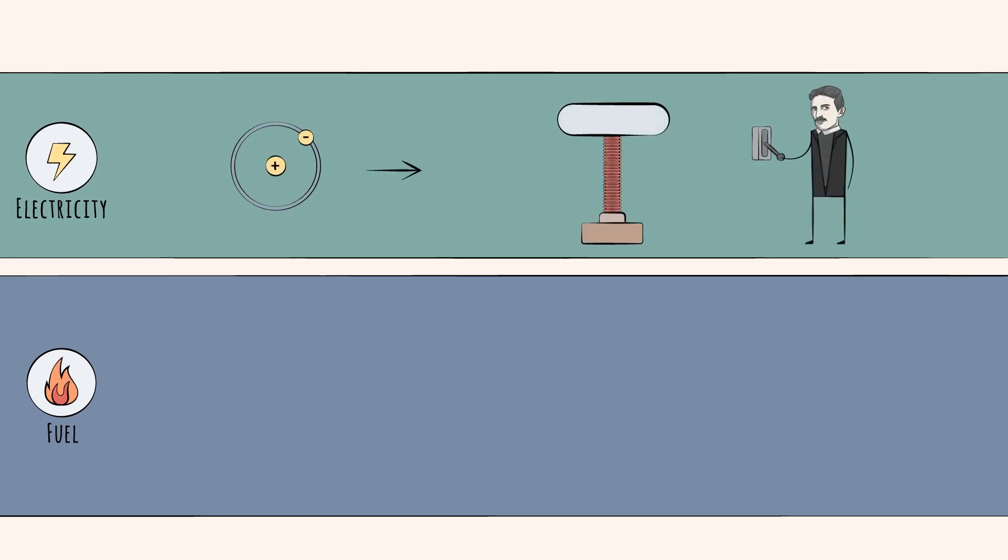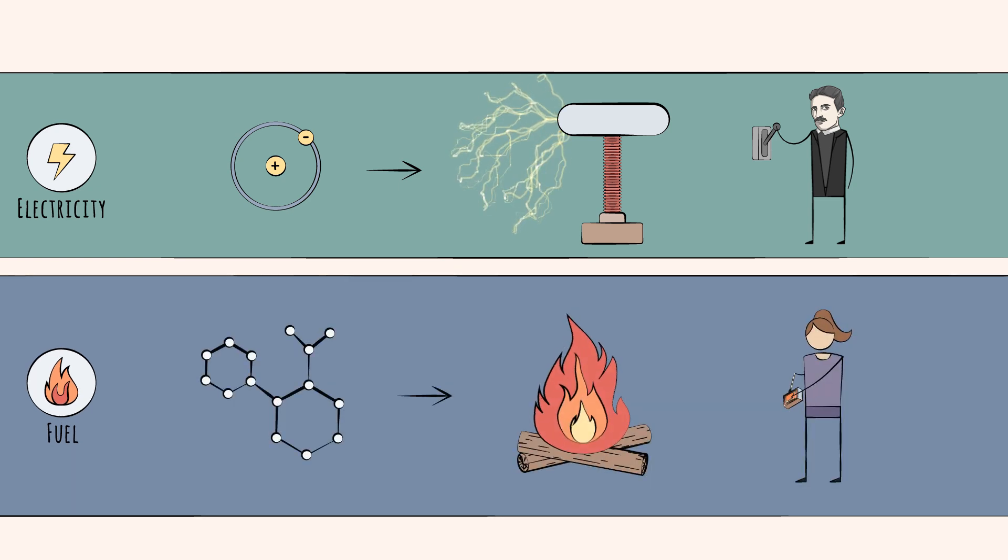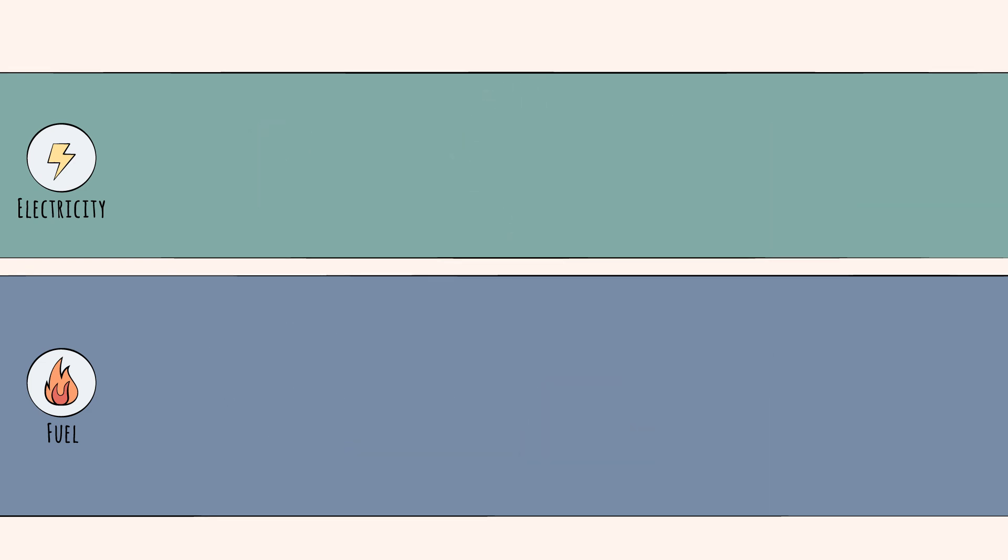Electricity involves electrons. Fuel, on the other hand, means molecules which store energy. The electricity versus fuel distinction applies to the different ways we source and use energy. It also applies to the steps in between: moving energy and storing it.